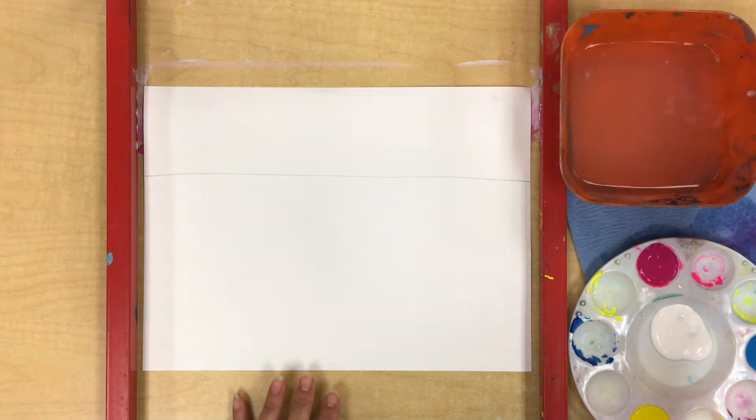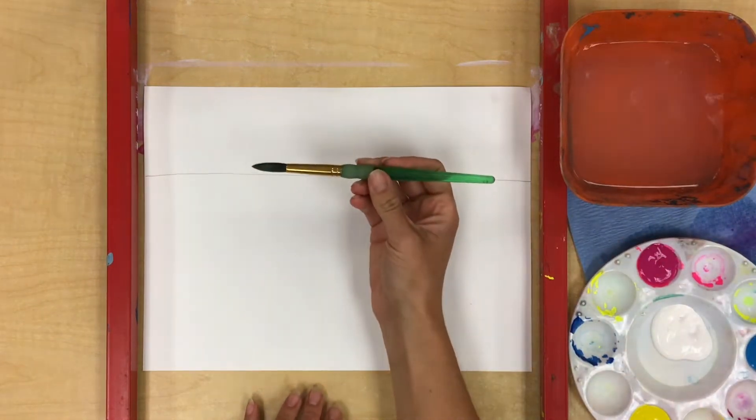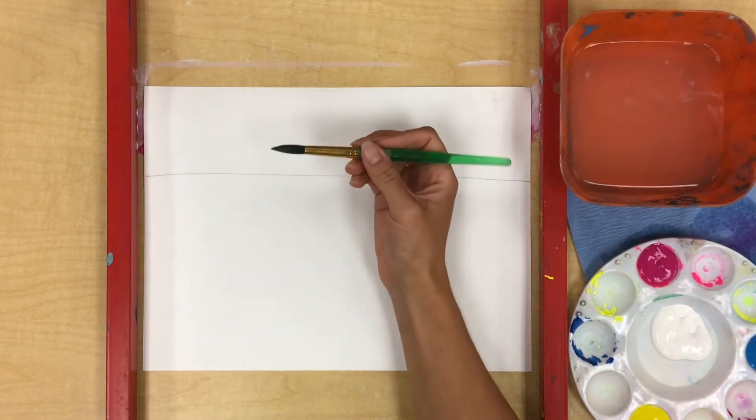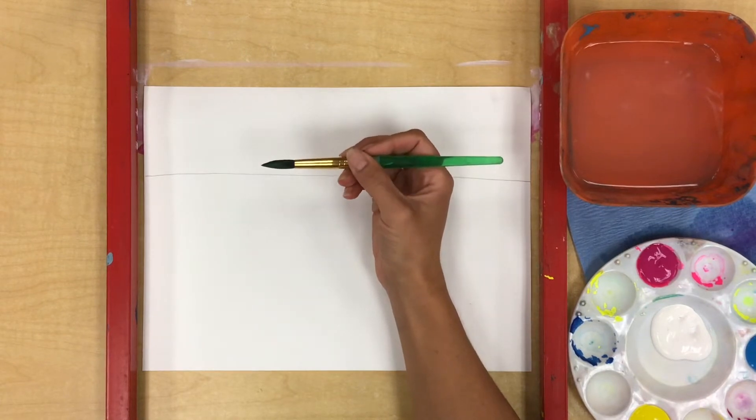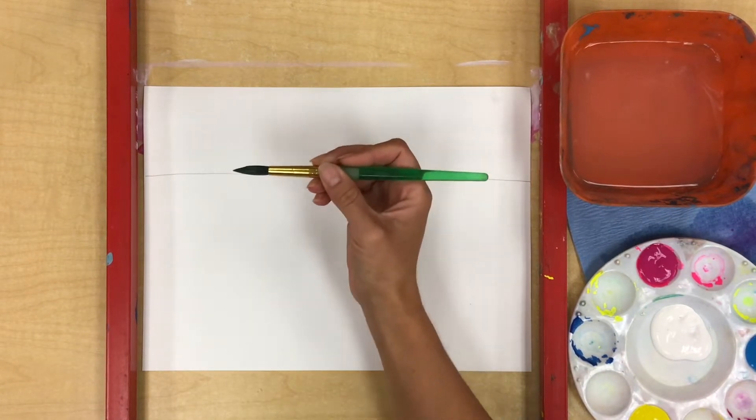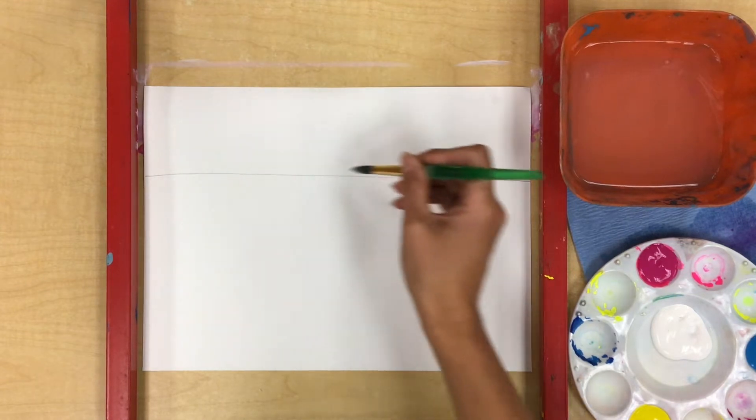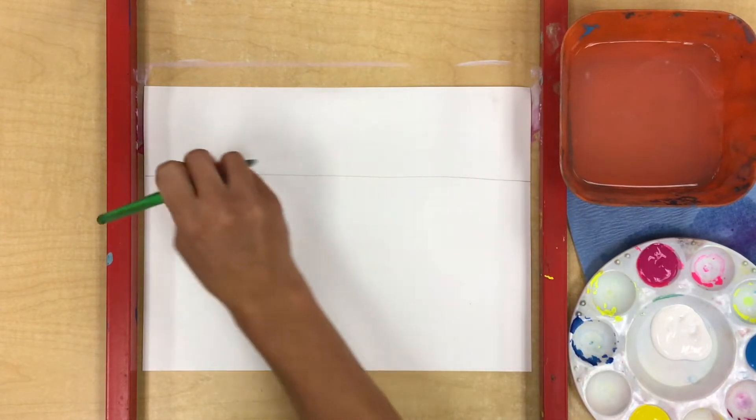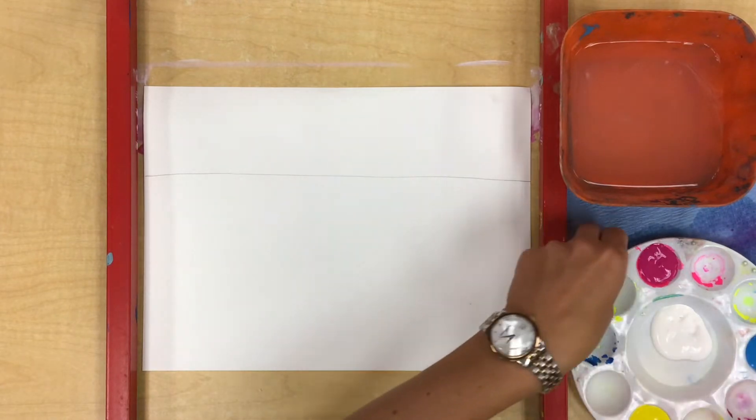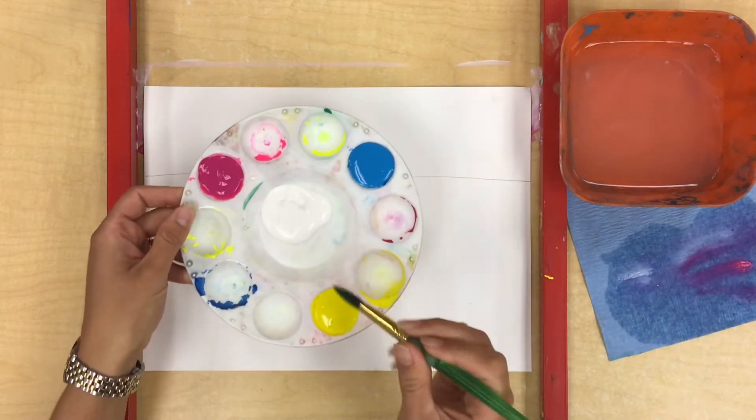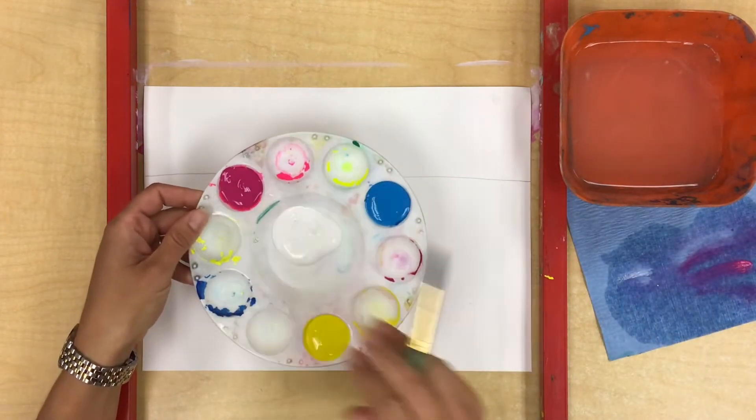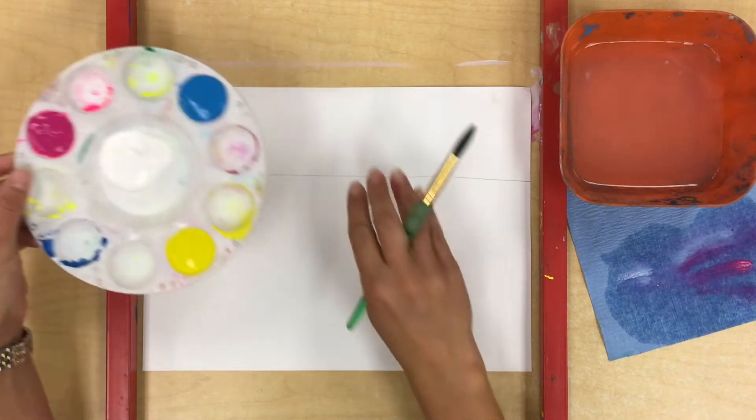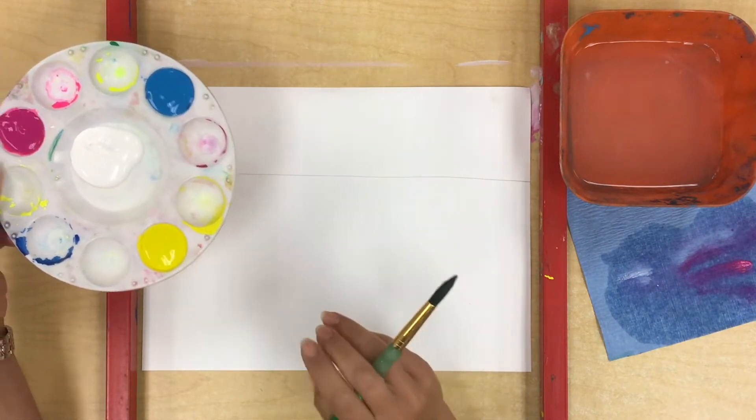Another thing we're really going to be focusing on today is using our supplies correctly. So we're going to be holding our brush like we hold a pencil. We are going to be painting gently as we do our brush strokes back and forth because we don't want to give our brush a bad hair day. And we're going to make sure that we're not mixing up the paint colors in our paint palette that we're sharing as a table. We're only mixing the colors on our paper.